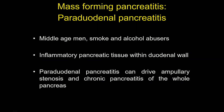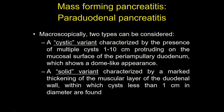Regarding mass-forming paraduodenal pancreatitis, there is a typical clinical profile. Usually these patients are middle-aged men, smokers with alcohol abuse. It is an inflammatory pancreatic tissue. Smoke and alcohol can stimulate the inflammation process, leading to ampullary stenosis and chronic pancreatitis of the whole pancreas. We can have two variants: the most frequent is the cystic variant, characterized by the presence of multiple cysts greater than one centimeter.